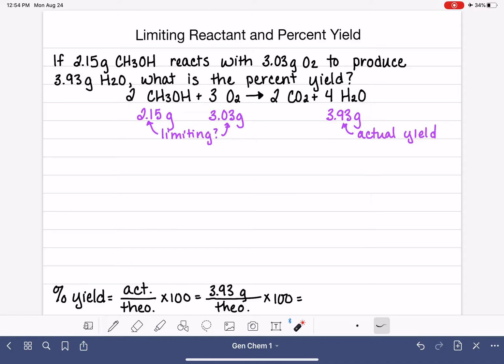In a limiting reactant problem, I told you I like to just set up my own little stoichiometry problem. I'm going to choose one of the two reactants, choose whichever one I want. I'll go ahead and choose the methanol CH3OH, and I'm going to write myself a stoichiometry problem.